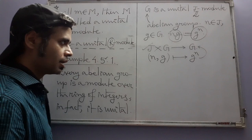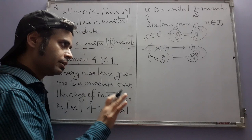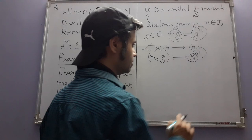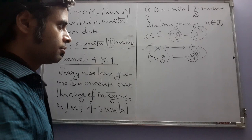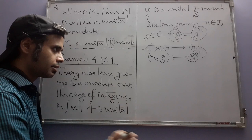Condition (3), (n+m)g, will use the other rule of exponents. This shows that G is indeed a J-module (or Z-module). And for unitality: 1·g by definition is the first power of g, which by the definition of integral powers is just g itself. So yes, G is a unital Z-module.